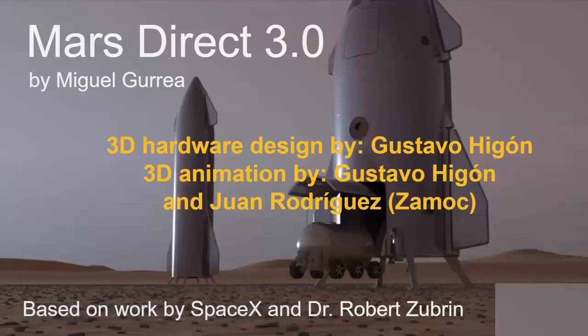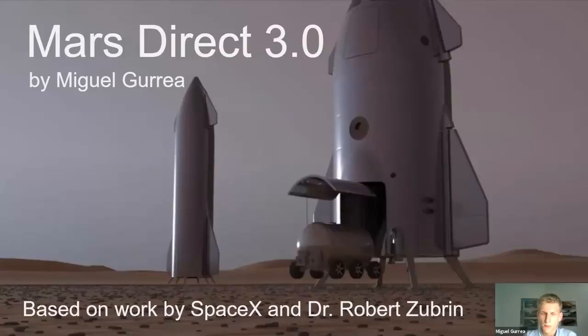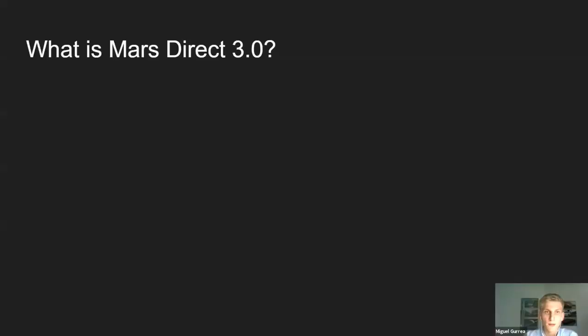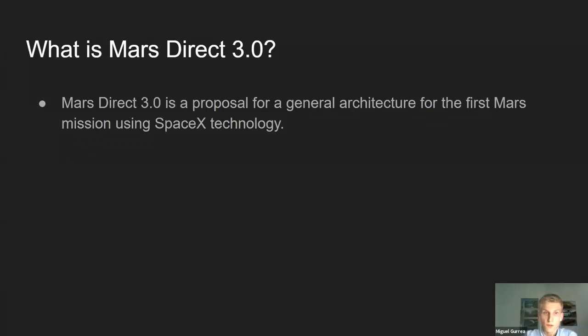This is Mars Direct 3.0. My name is Miguel Currea, I am from the Mars Society Spain, a collaborator there, and I'm going to present Mars Direct 3.0, which is based on work by SpaceX and Dr. Robert Zubrin. First of all, I have to thank Gustavo Ygon and Juan Rodríguez for having developed the animation especially for this presentation. What is Mars Direct 3.0? It's a proposal for a general architecture for the first Mars mission using SpaceX technology.